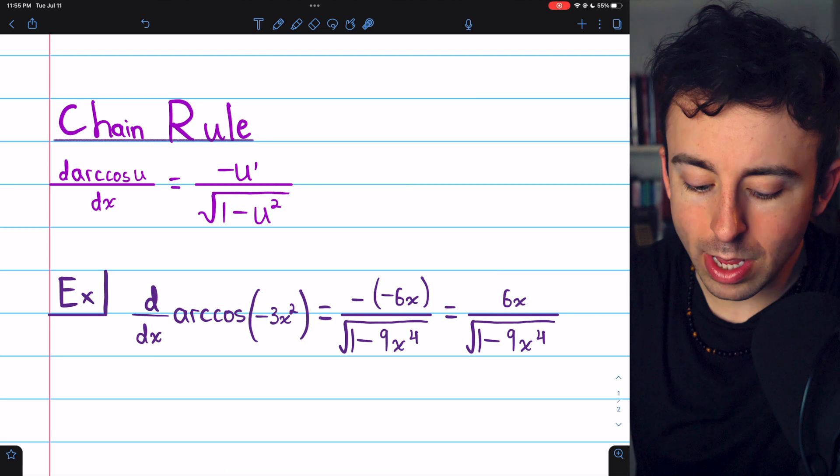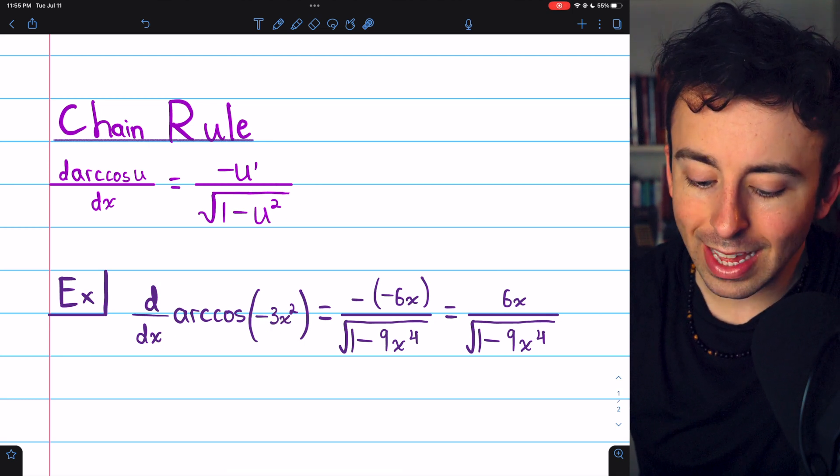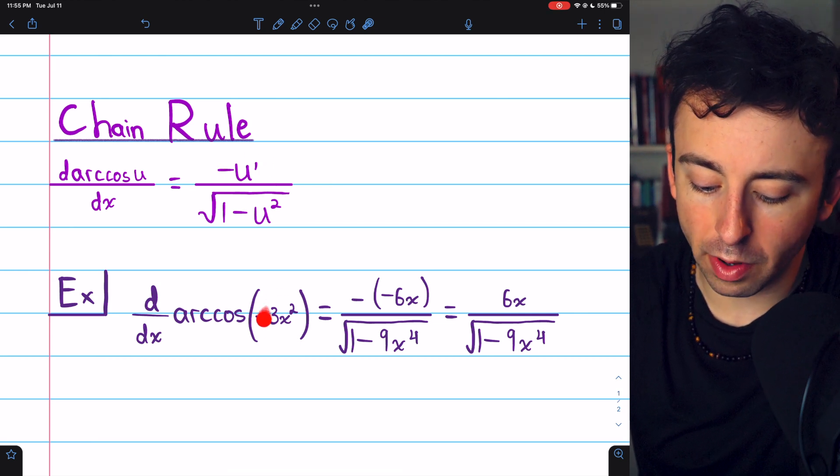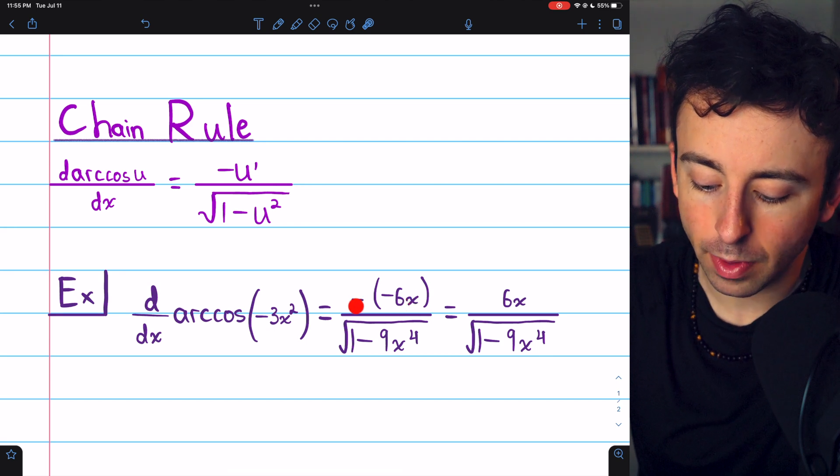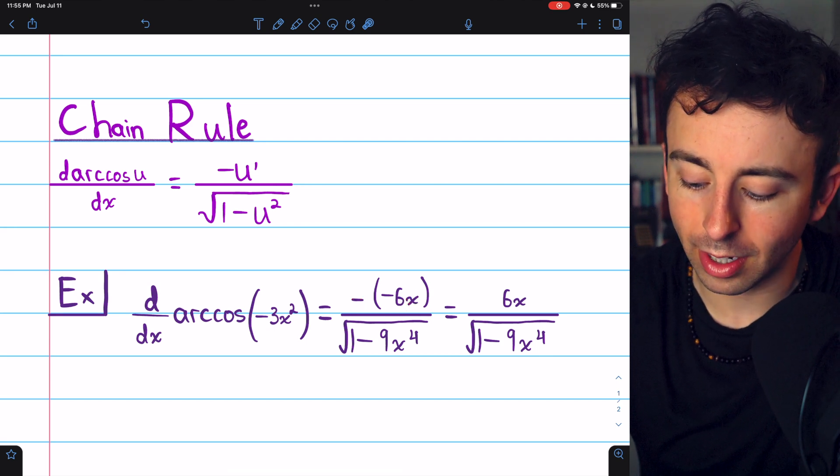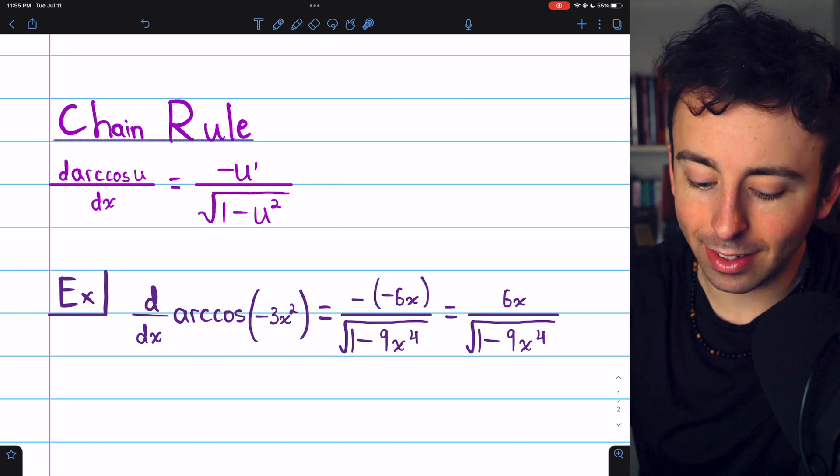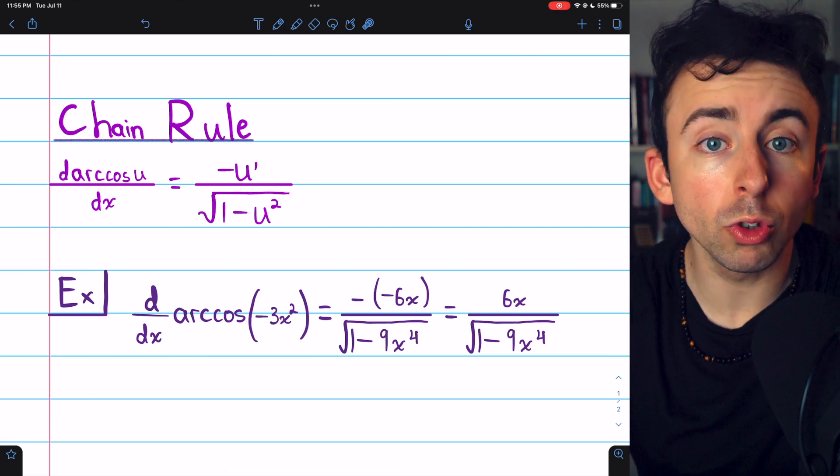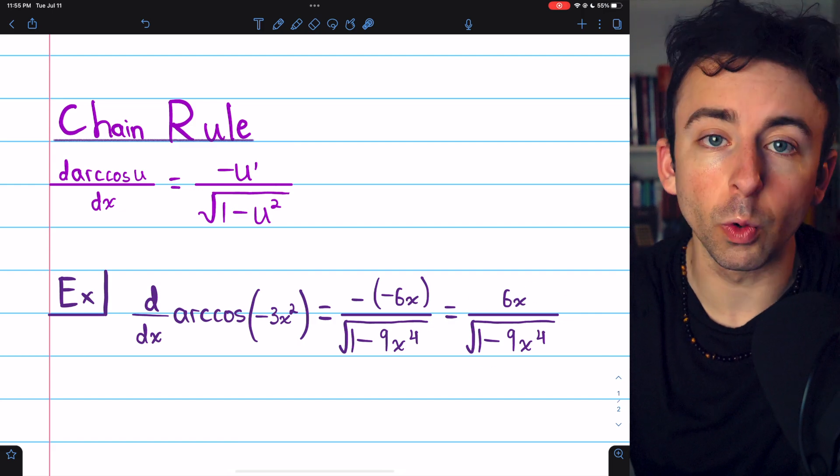For example, if we have the derivative of arc cosine of negative 3x squared, that's equal to negative derivative of the inside function. The derivative of the inside function is negative 6x, and we need the negative of that, which is just positive 6x. And in the denominator, we have 1 minus the inside function squared. Negative 3x squared squared is 9x to the fourth, and so that would be the derivative.